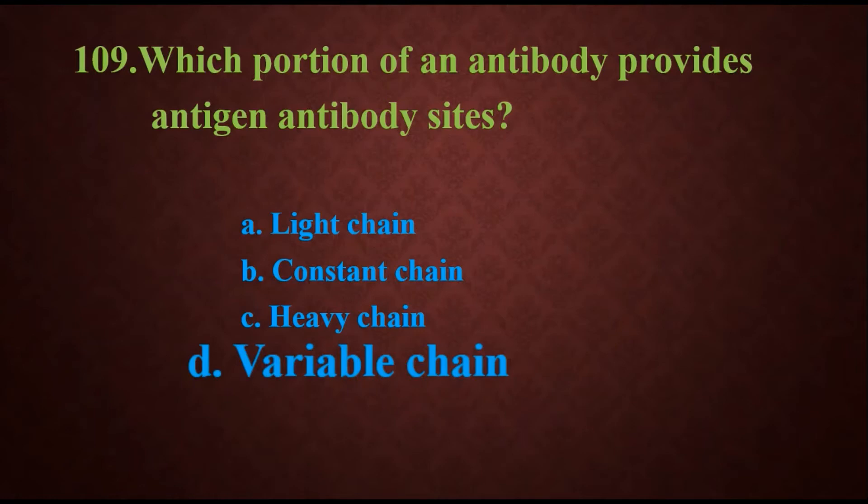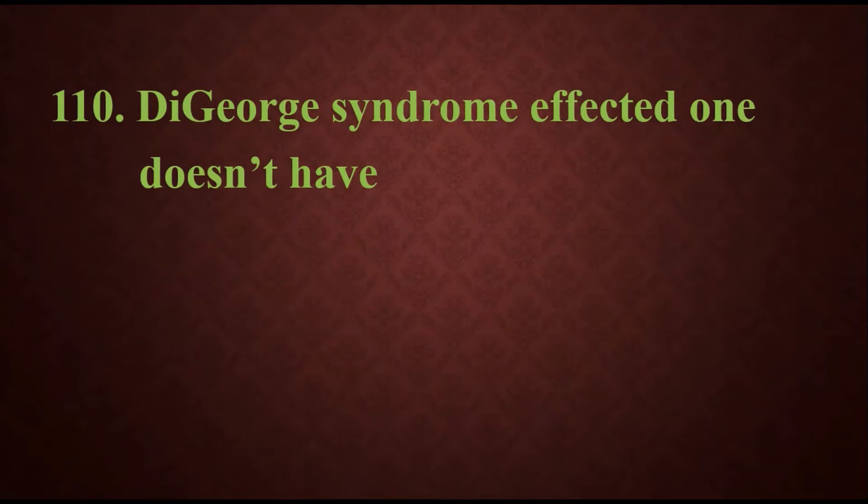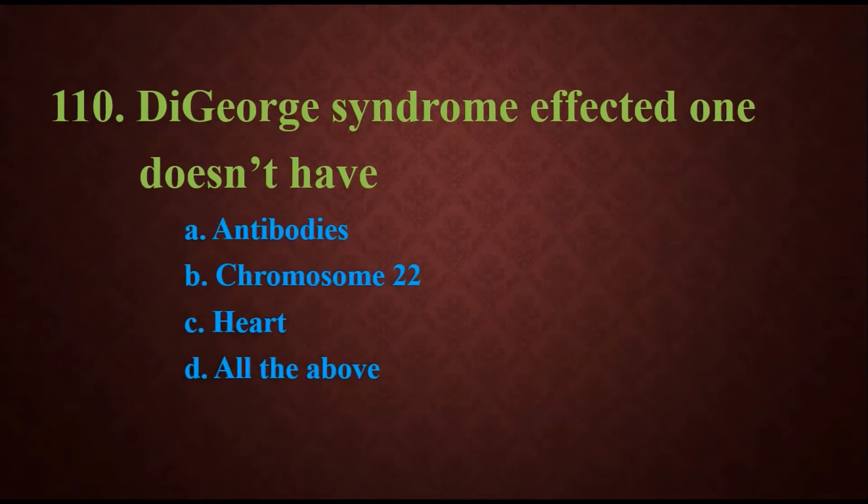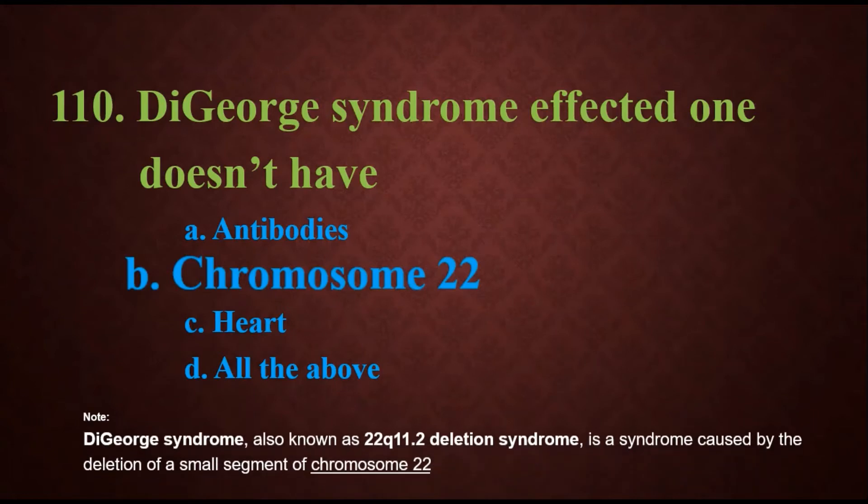Question 110: DiGeorge syndrome affected one does not have options: antibodies, chromosome 22, heart, or all of the above. The answer is chromosome 22. DiGeorge syndrome is also known as 22q11.2 deletion syndrome, as this syndrome is caused by the deletion of a small segment of chromosome 22.